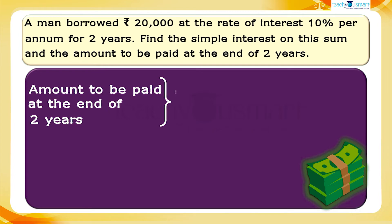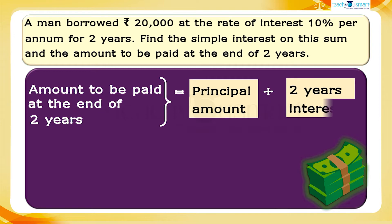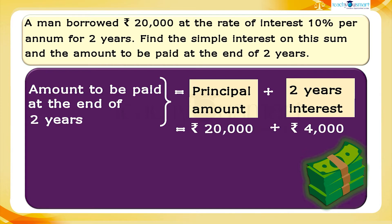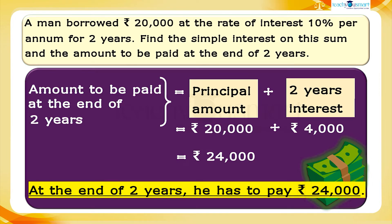Next, we have to find the amount to be paid at the end of two years. That is equal to the sum of the principal amount and the interest for two years, which equals 20,000 rupees plus 4,000 rupees, equals 24,000 rupees. Therefore, at the end of two years, he has to pay 24,000 rupees.